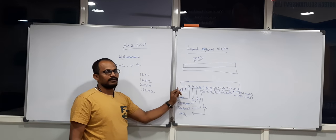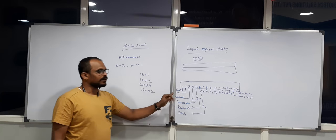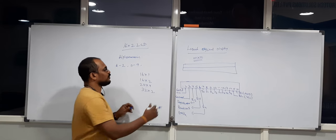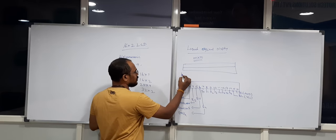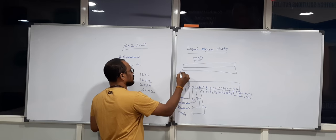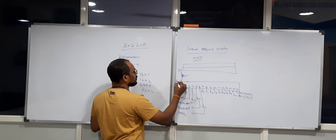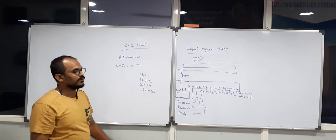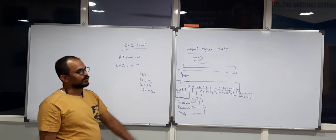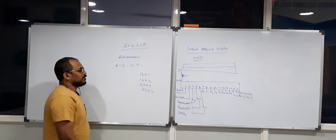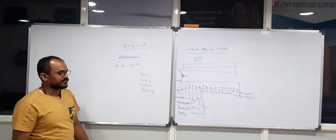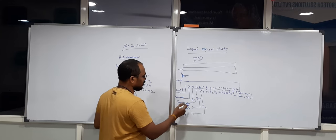By connecting a variable resistor to the contrast pin, pin 3, you can adjust the brightness. The variable resistor has three terminals: one end connected to VCC, the other end to ground, and the wiper connected to the contrast pin. Pins 4, 5, and 6 are the three control lines, and you need to understand the importance of these three control pins.